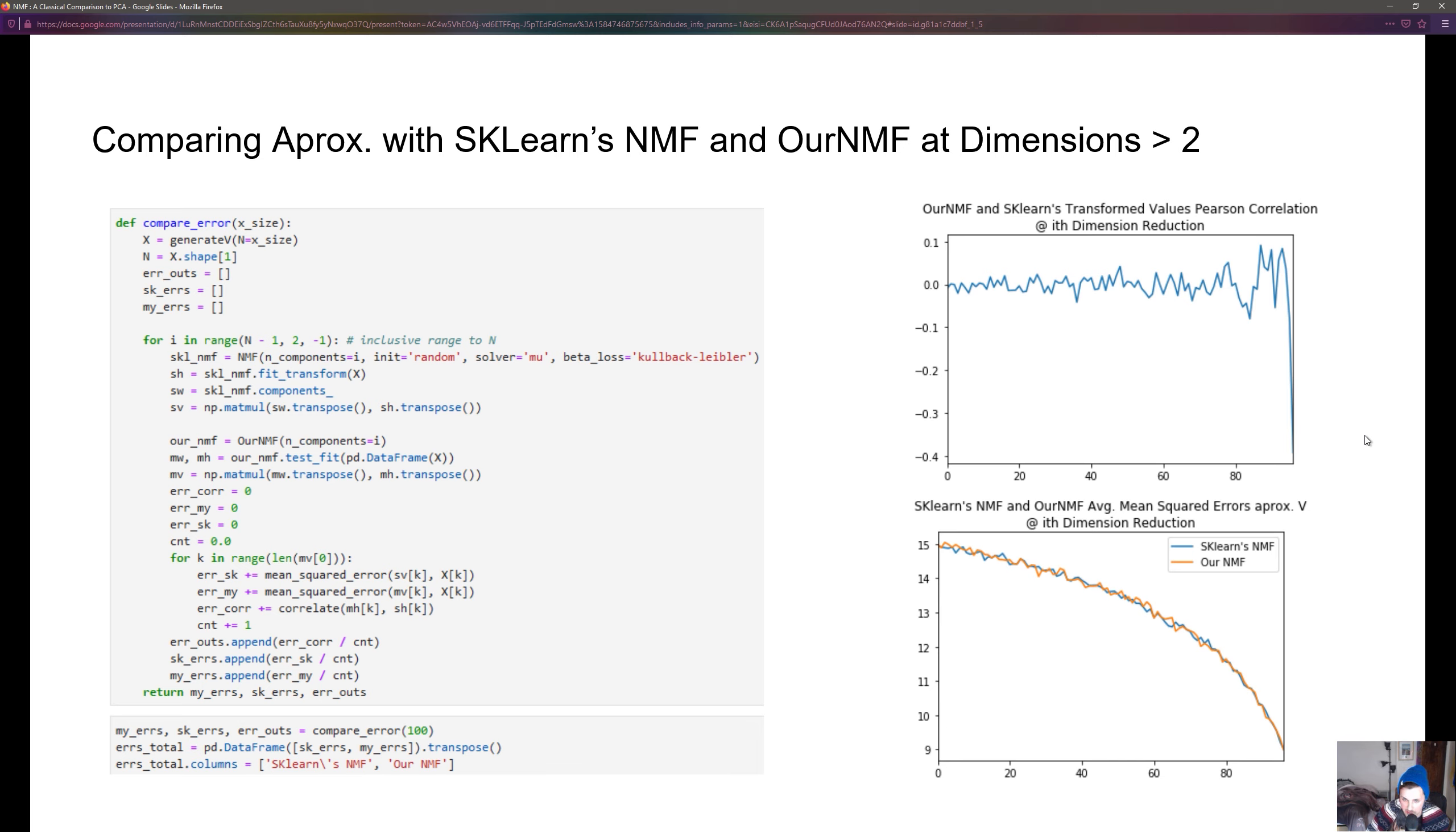scikit-learn might have some other optimizations. You can see in the function to call scikit-learn's NMF we give it a beta loss value and a solver value which basically means they have other parameters to optimize NMF for specific use cases, maybe approximation or something like that.